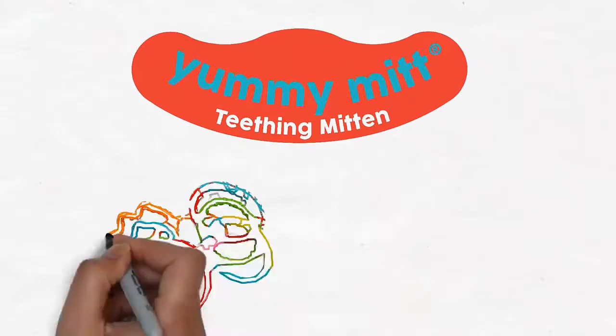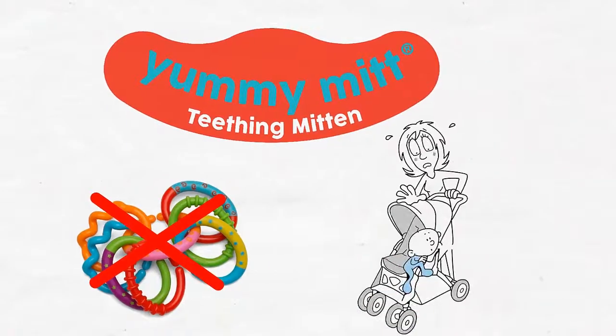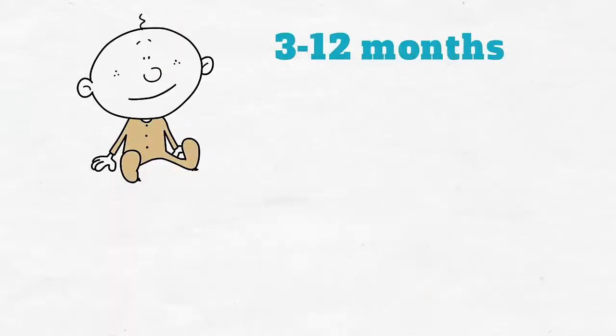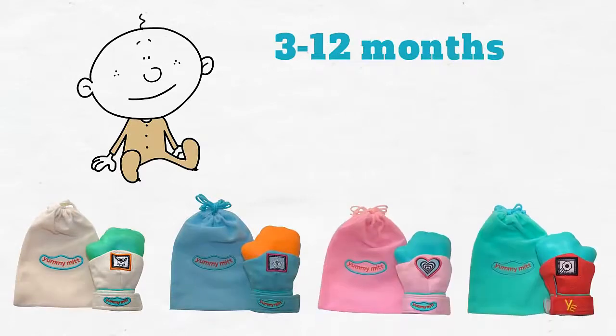Yummy Mitt has no detachable parts that may cause choking. For infants 3 to 12 months, with 4 color variations, and even glows in the dark.